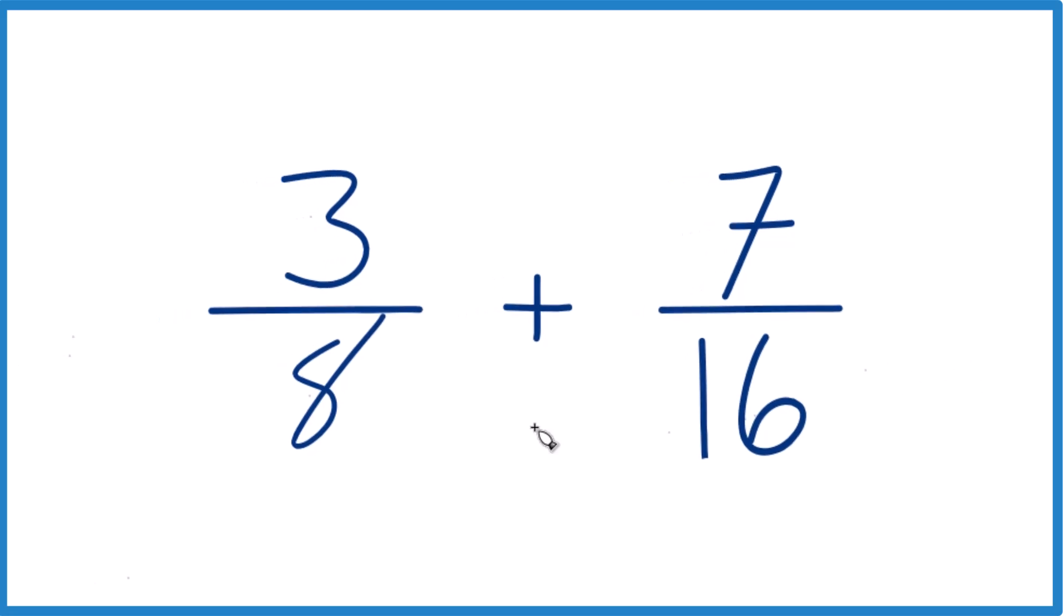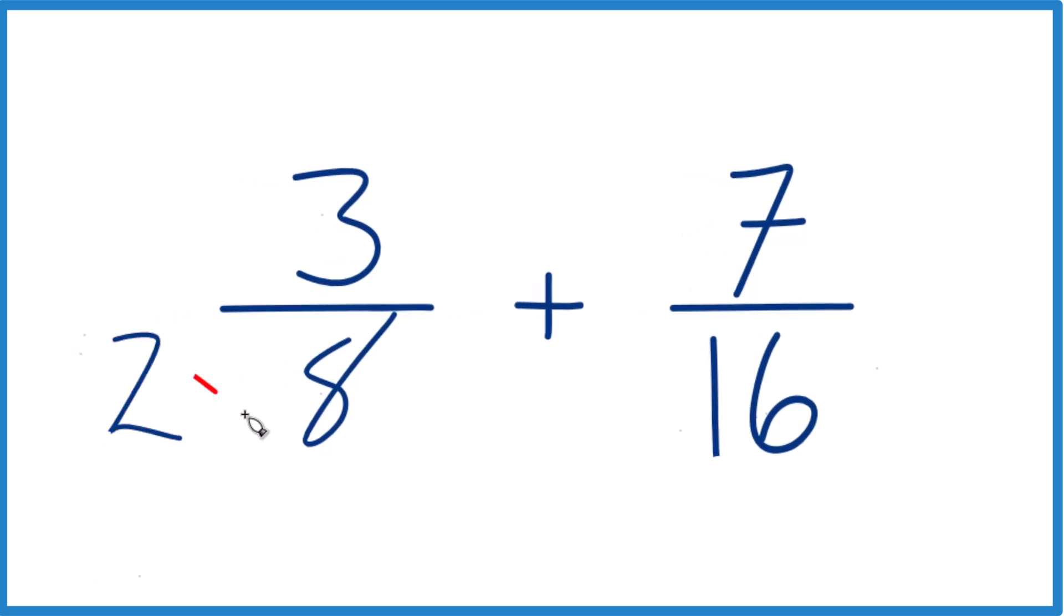Why don't we do this? Why don't we say two times eight? Because two times eight would be 16, and we have 16 here. That's our common denominator.